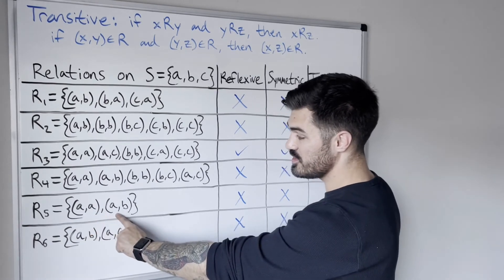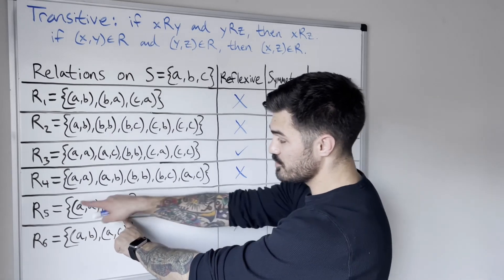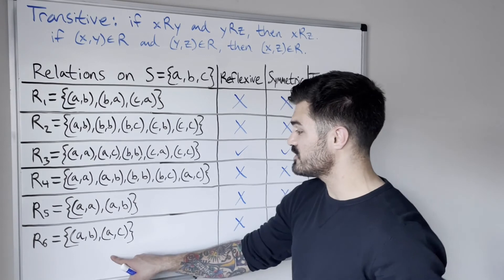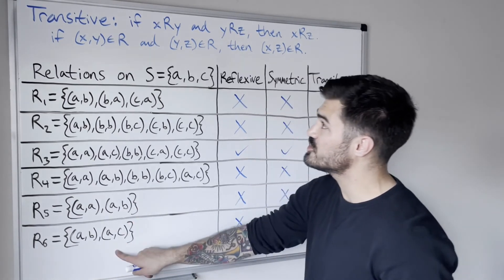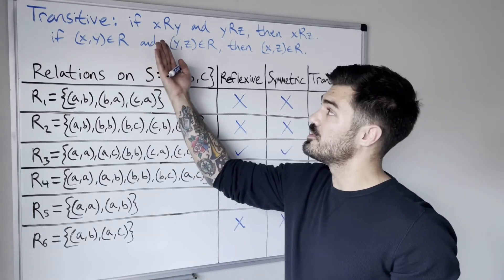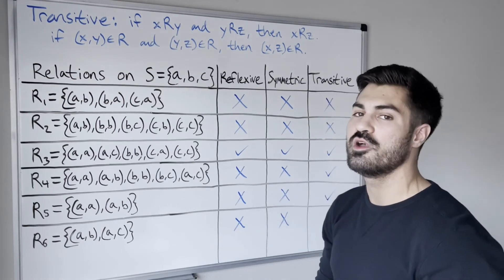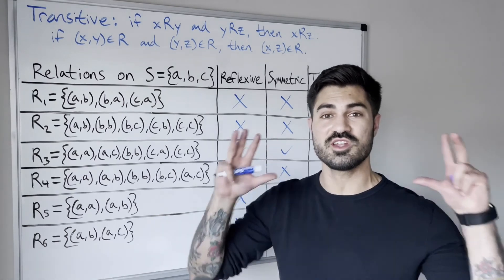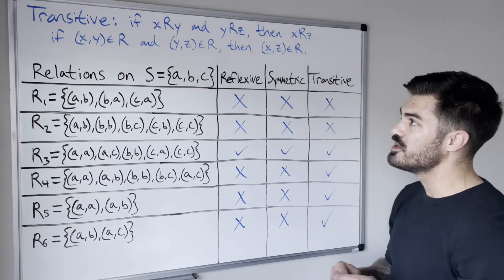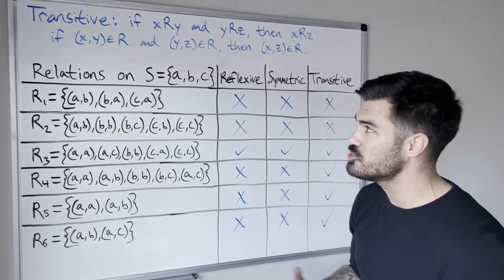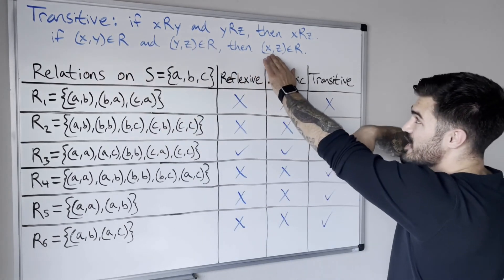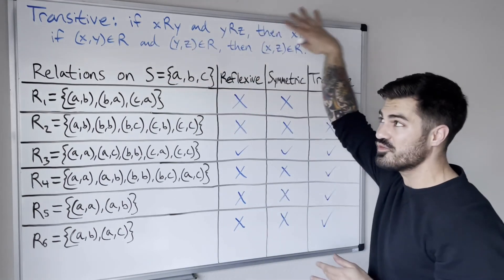Relation six is an example of what's called vacuously true. None of the ordered pairs in this relation satisfy the condition where the second coordinate of one matches the first coordinate of another — so the conditional statement is never triggered. We say it's transitive because it's not 'not transitive.' This is like the logic truth table: if the hypothesis P is false, then P implies Q is true. If you can't find a counterexample where we have (X,Y) and (Y,Z) but not (X,Z), then the relation is transitive.